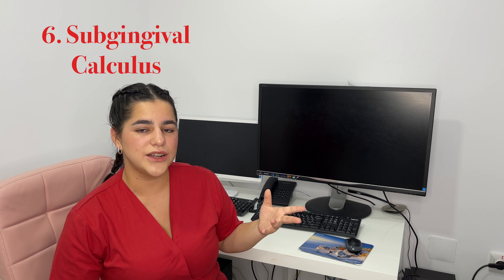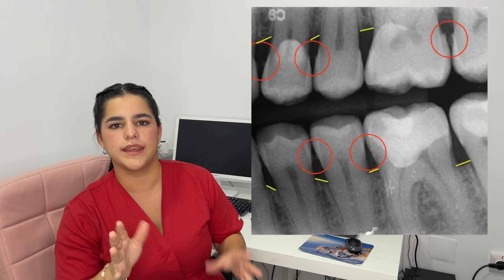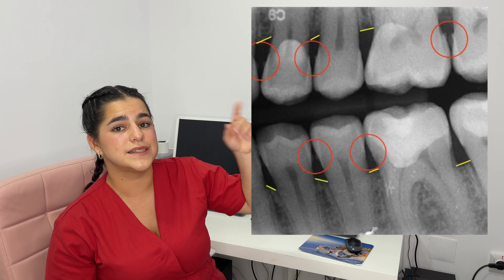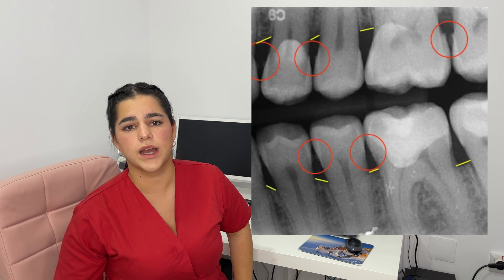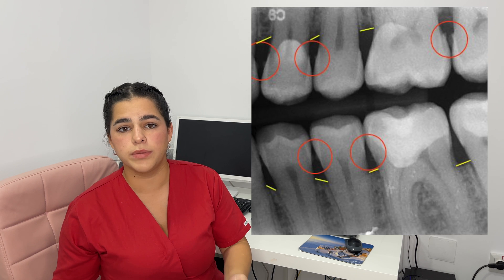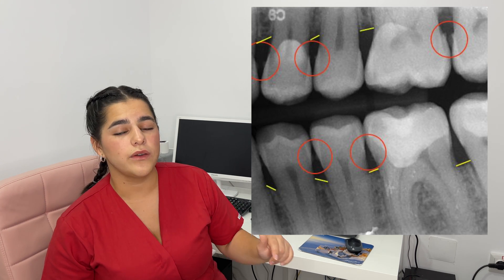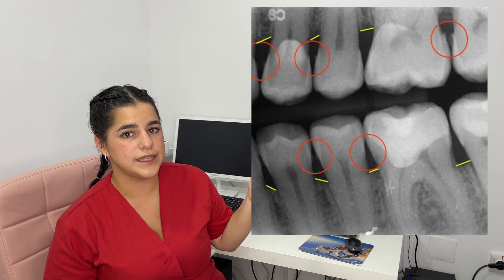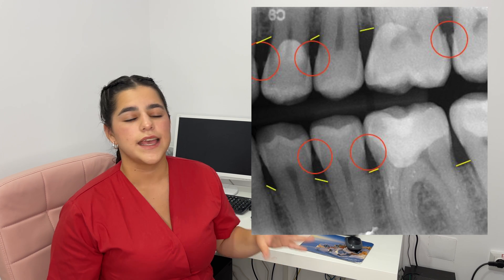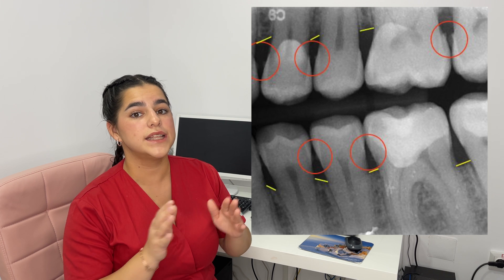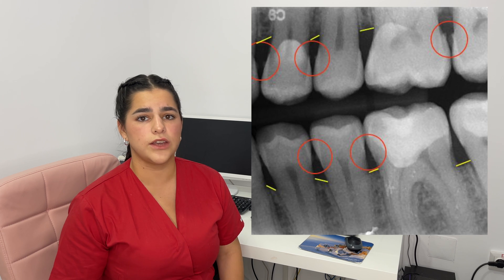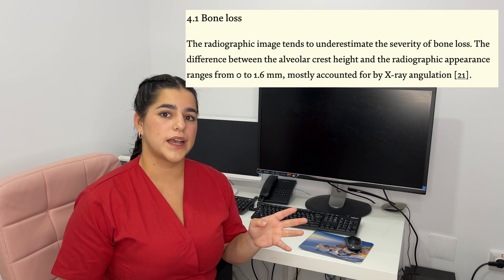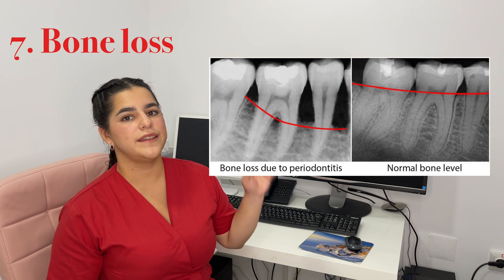Moving to subgingival calculus — it is radio-opaque on x-rays, not as bright as metal, but visible as small white links here and there. In this image, wherever circled in red, you can see subgingival calculus that must be removed, otherwise it will develop into a periodontal problem requiring periodontal treatment. In this image, the yellow lines show that interdental bone papillae are very retracted — we call them blunt — which already indicates periodontal disease. Always refer to a specialist to investigate. Also remember: it always looks better on x-ray than in real life. The radiographic image tends to underestimate bone loss severity by 0 to 1.6 millimeters compared to real life, so always check clinically as well.